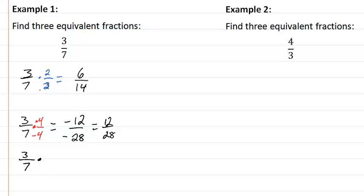Okay, let's say that we multiply by 5. We'll get 15/35. All of those are equivalent to 3/7.